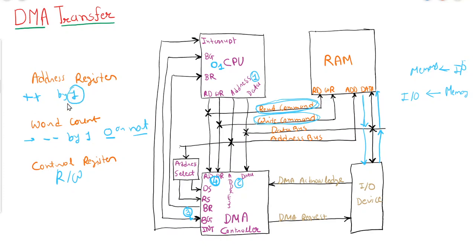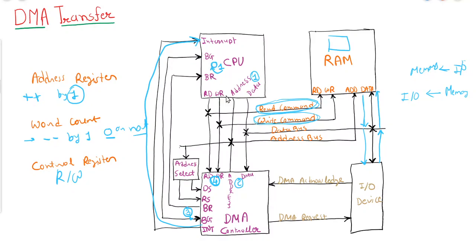After each operation, the address register is incremented and the word count is decremented by one. If the word count reaches zero, the DMA controller stops the operation and informs the CPU by generating an interrupt request. The CPU will then convert the bus grant from one to zero, retake control of the bus, and normal communication between the CPU resumes. The DMA controller and IO device will be out of the picture, and the CPU can now process the transferred data at high speed.